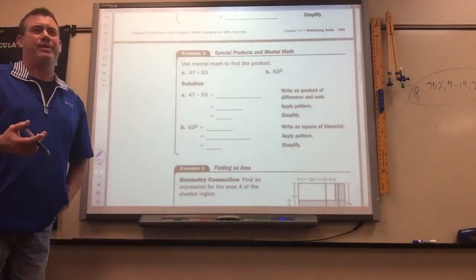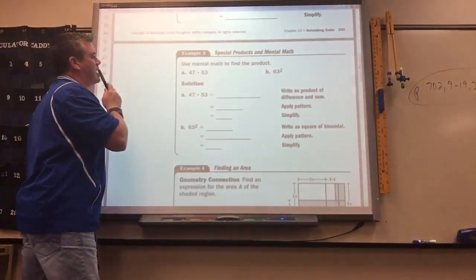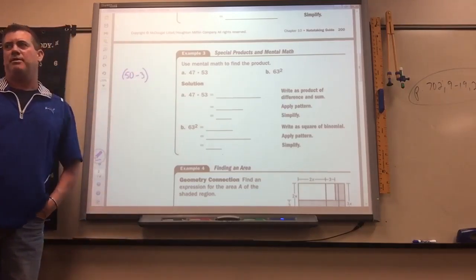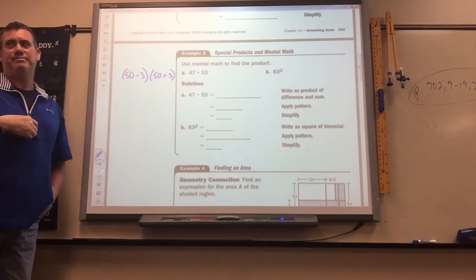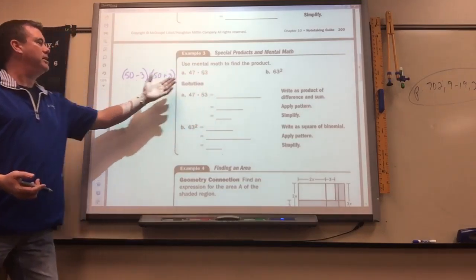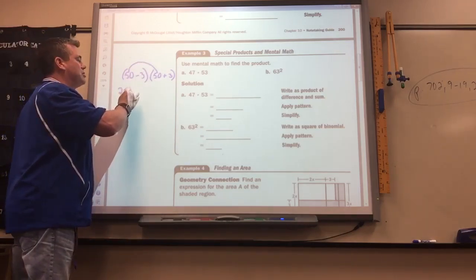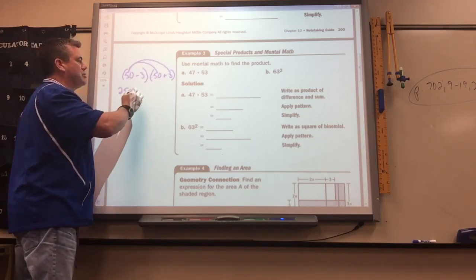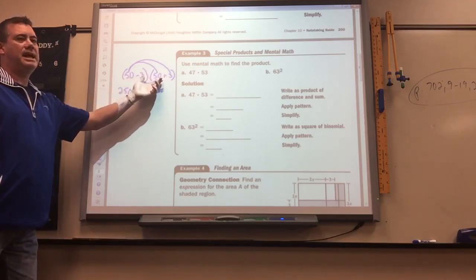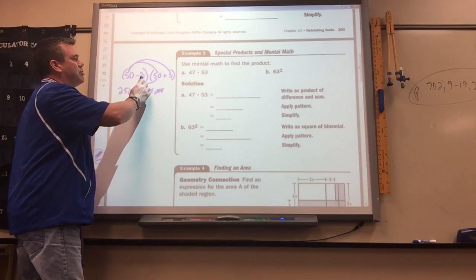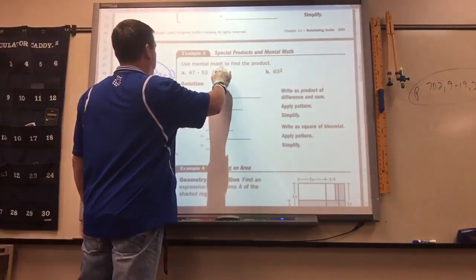This is stuff you did way back in 7th and 8th grade using the distributive property. 47 times 53: 47 I could write as 50 minus 3, that's the same as 47, right? 53 I could write as 50 plus 3. So 47 times 53, I could write it like this, and then you could use FOIL to solve it. 50 times 50 is 2500. 50 times 3 is plus 150. Negative 3 times 50 is minus 150, which happens, they're going to cancel each other out when the signs are different. And then a negative 3 and a positive 3 multiplied is negative 9. So 2500 minus 9 is 2491.